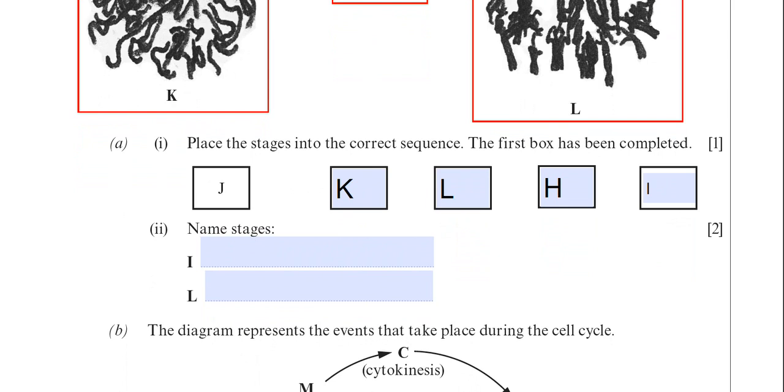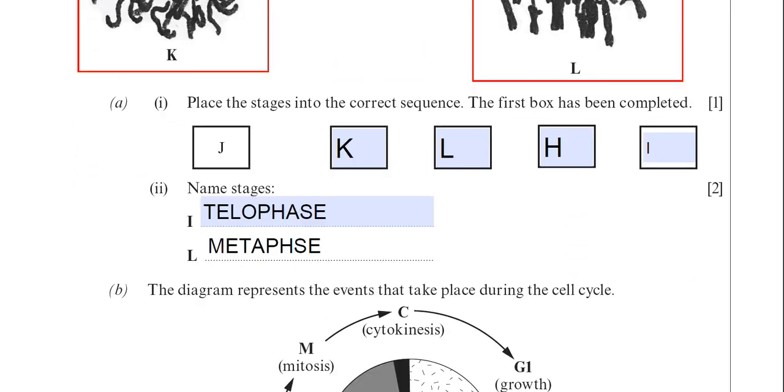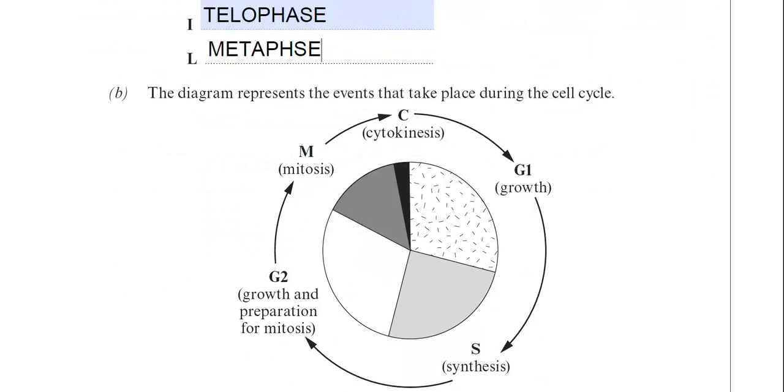Part A2 then. Name stages I and L. Well I've really done that already. So I'll just type the answer in. So I is telophase and L is metaphase.